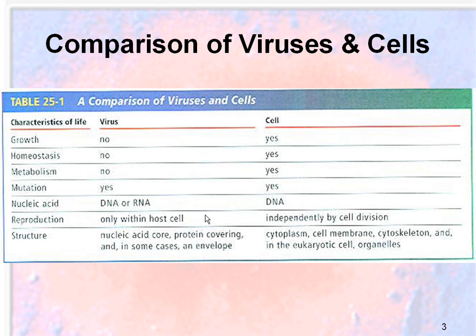When it comes to reproduction, viruses can only reproduce when they are in the host cell, whereas cells divide independently by the process of cell division. When it comes to structure, viruses are made up of a nucleic acid core, a covering of protein, and sometimes an additional envelope as a protective mechanism. Cells, of course, have a cytoplasm, a cell membrane, a cytoskeleton inside the cytoplasm, and in the case of eukaryotic cells, organelles.